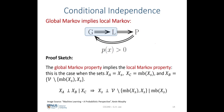Now let us look at the sketch of proof that the global Markov property implies the local Markov property. We have seen in the earlier slides that the global Markov property is defined by the conditional independence expression where xA is conditionally independent of xB given that we have observed xC. Here it is important to note that xA, xB and xC are disjoint sets of random variables, where each set can contain one or more random variables.